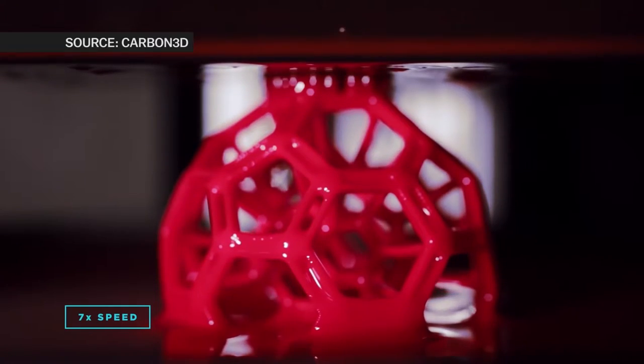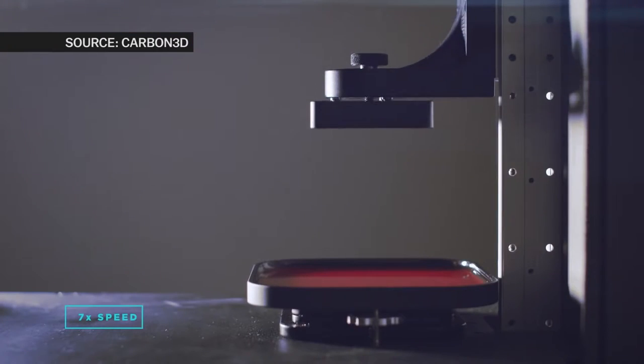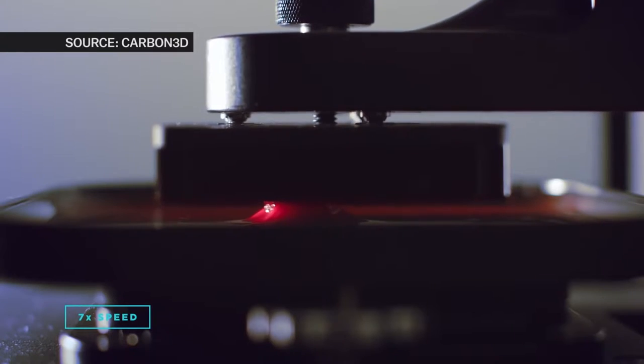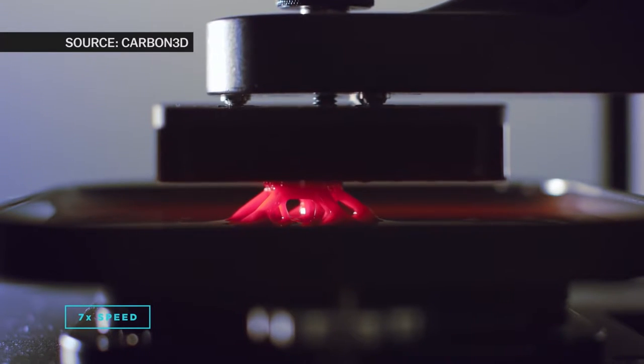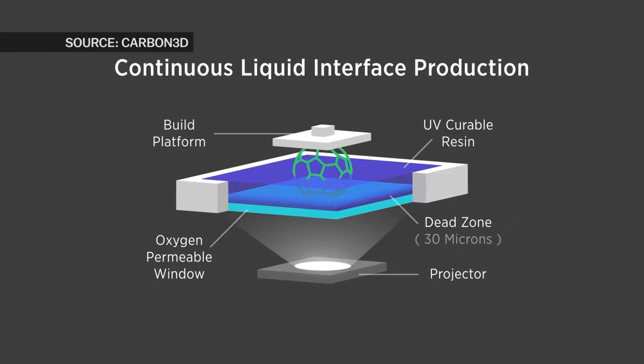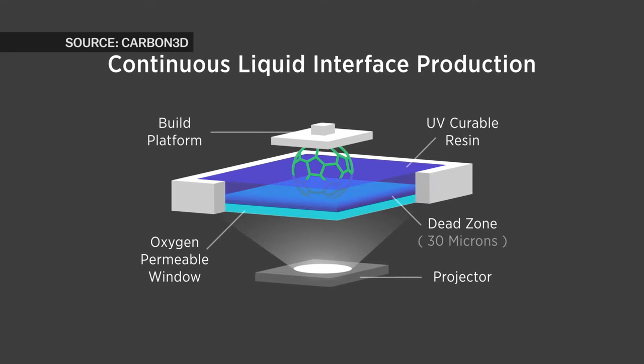And this 3D printing forms an object continuously out of a liquid resin. So what's happening here is you have a bath of liquid resin that solidifies when light hits it. So the platform dips into this resin and as it rises up you have a projector underneath the resin pool that's projecting a series of cross-sectional images that are in the exact shape of the object you want to make.